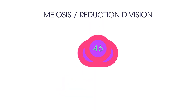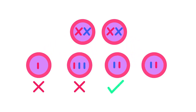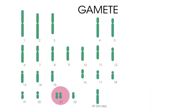In humans, meiosis produces four daughter cells that each have 23 chromosomes — half the number of a somatic cell. However, sometimes the chromosomes are not separated or divided up as they should be, and this is called non-disjunction. One example of non-disjunction in humans is the condition known as Down's syndrome.